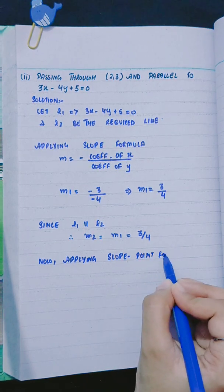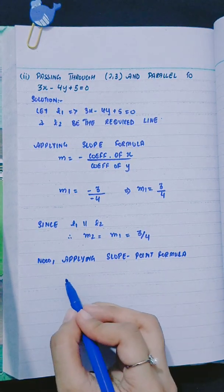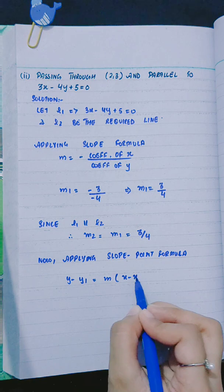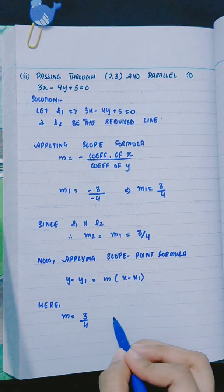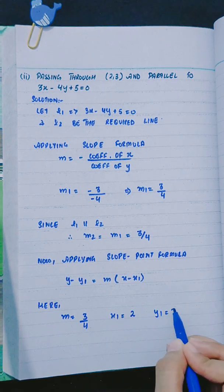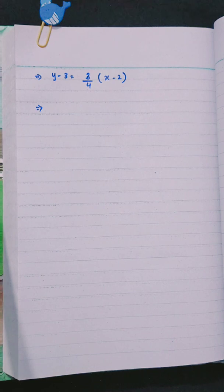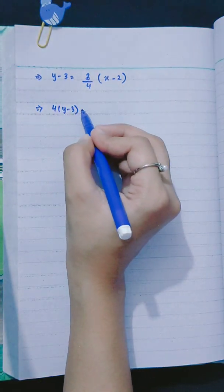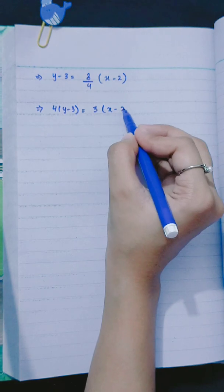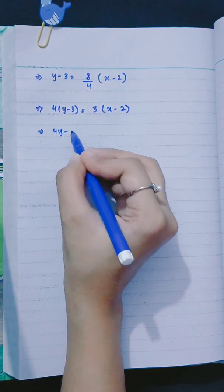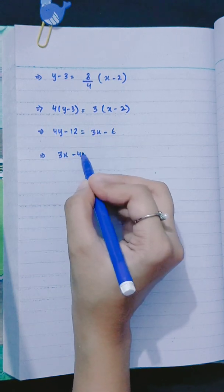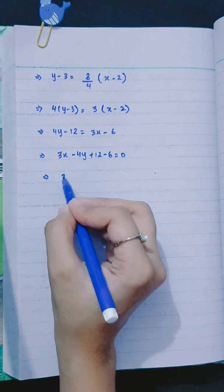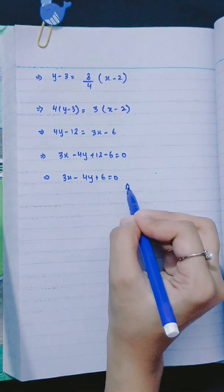Applying the slope-point formula: y minus y1 equals m times (x minus x1), where m equals 3 by 4, x1 is 2, and y1 is 3. So y minus 3 equals 3 by 4 into (x minus 2). Multiplying by 4: 4(y minus 3) equals 3(x minus 2), giving 4y minus 12 equals 3x minus 6. Rearranging: 3x minus 4y + 6 equals 0.